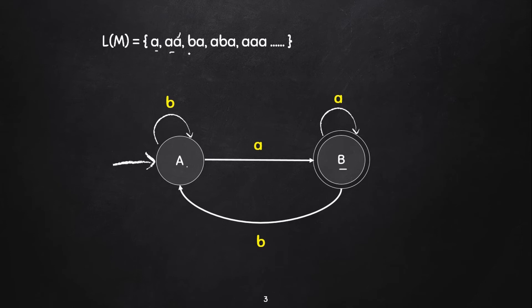This means that we can accept strings which are distinct. There will be accepted strings like A etc. Now if we go to state B, then we return to state with input B, then take and leave a term.